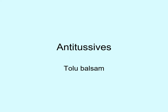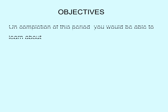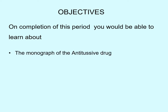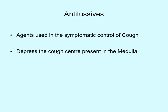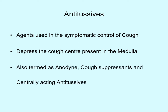Dear learners, today we will see our next crude drug named as Tolu Balsam. Tolu Balsam is from the class antitussive. Antitussive drugs are agents which are used in the symptomatic control of cough. These drugs depress the cough centers present in the medulla. They are also termed as anodyne — cough suppressants and centrally acting antitussives.